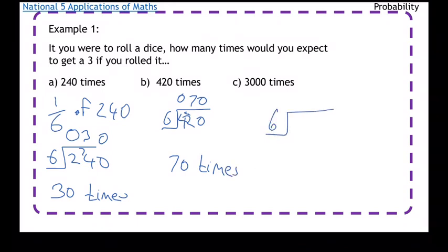And then the last one we're doing a sixth of 3000, so it's 500 times.